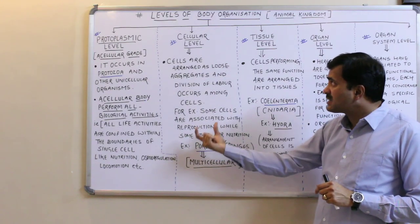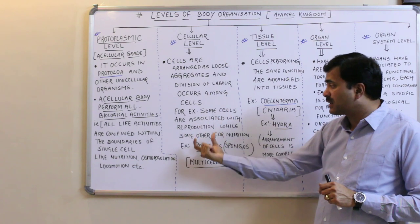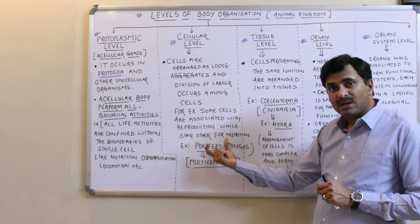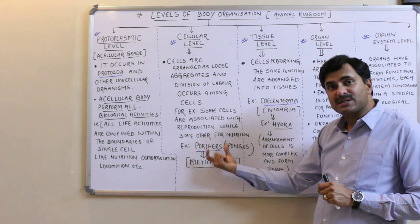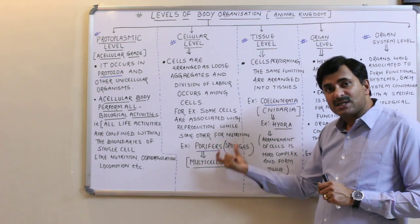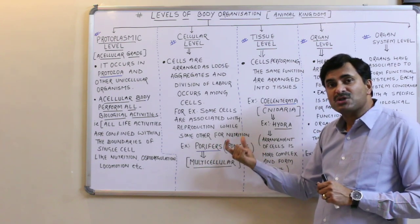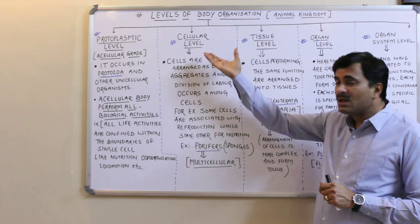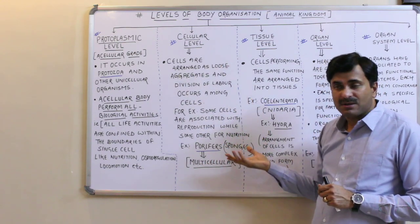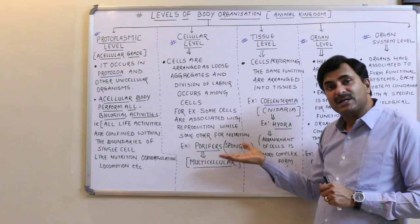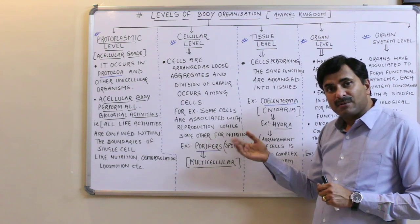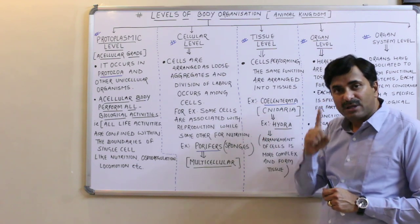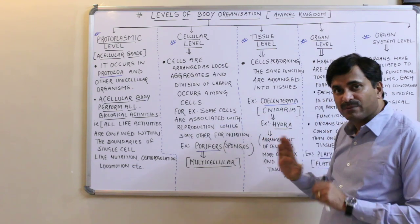The best example of the cellular grade of body organization is porifera — commonly called sponges. If asked what type of body organization is found in porifera or sponges, the answer is cellular grade of body organization. Porifera are basically multicellular, but the cells are present in loose aggregations and are not able to form tissue.